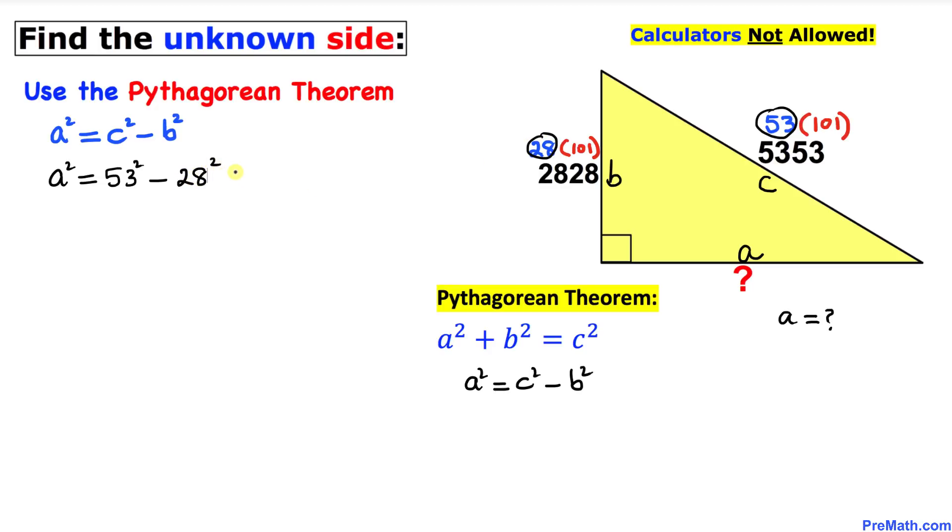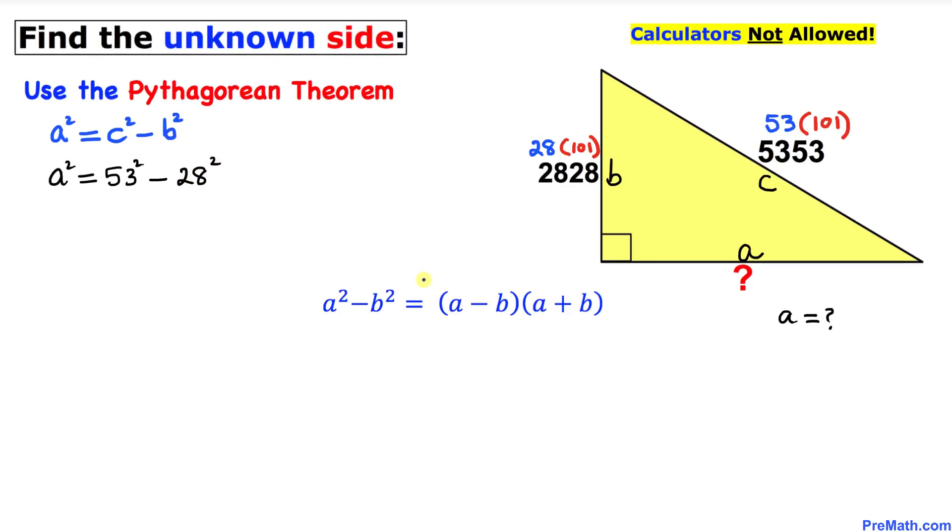Now let's recall this a² minus b² formula. So I can write these numbers as (53 + 28) times (53 - 28). Therefore, we got a² equal to 53 plus 28 times 53 minus 28.